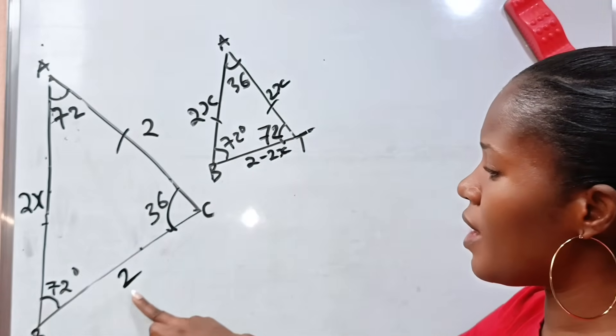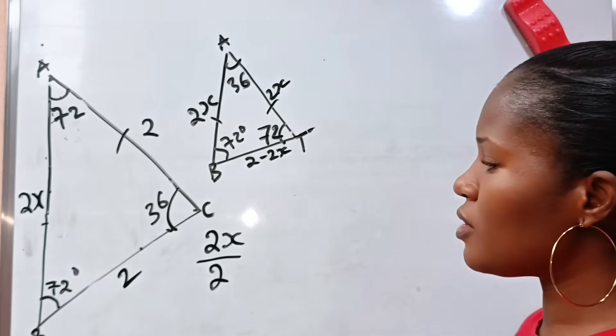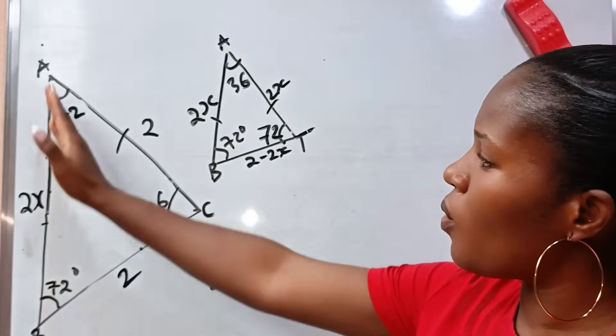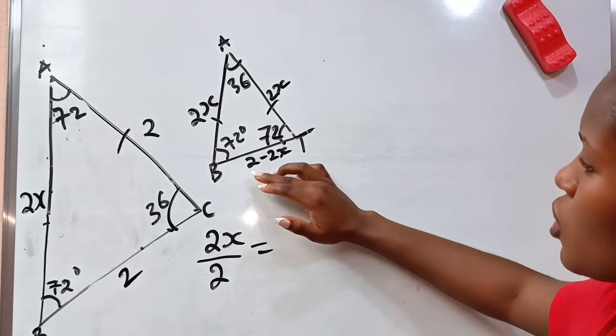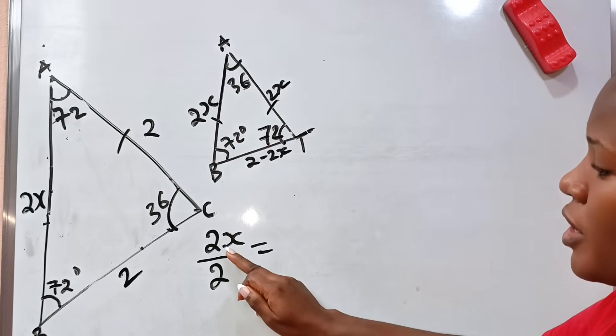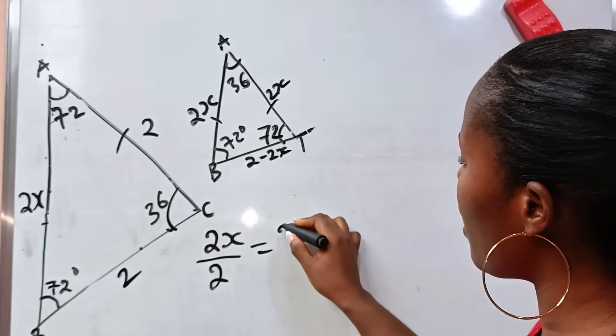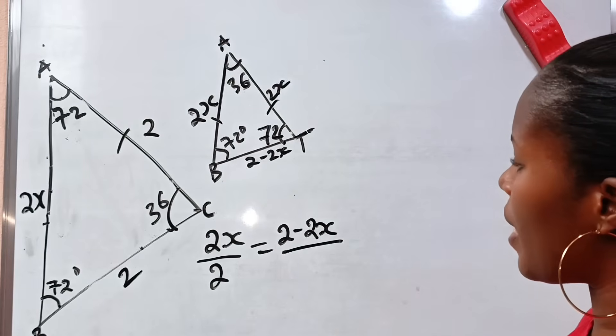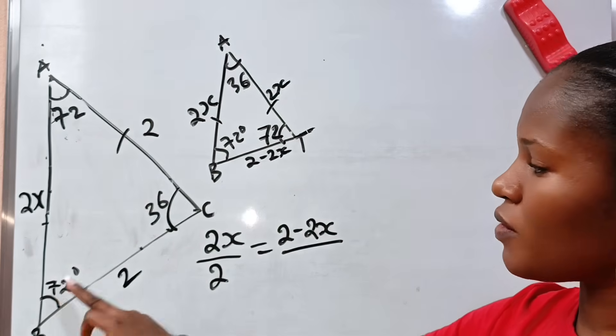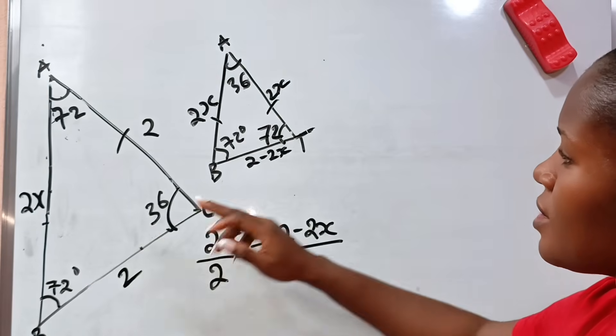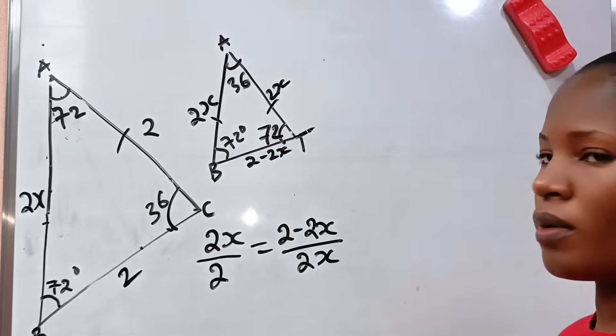So if I decide to start with the big one, if I say 2X divided by 2, it should be equal to 2X is for what? The base 72 and 72. That means we are talking about 2 minus 2X to correspond to 2X, right? Because this is our own base 72, 72 as well. So we have 2 minus 2X divided by 2X.